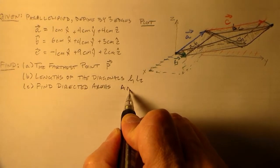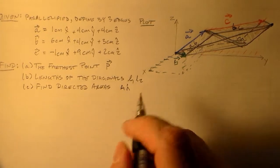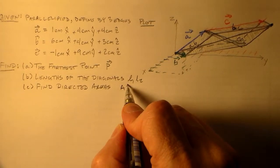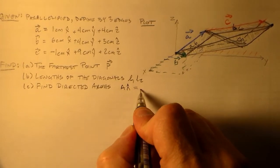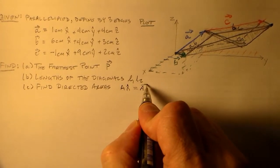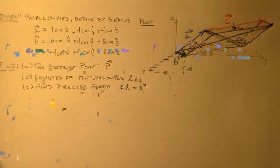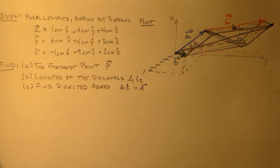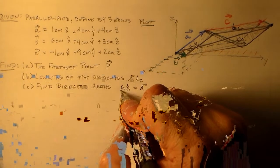We'll find the directed areas: the area and the normal direction out of the AB, BC, and CA faces. You'd have the area times the normal direction — the directed area vector.